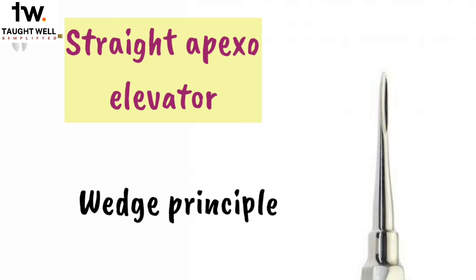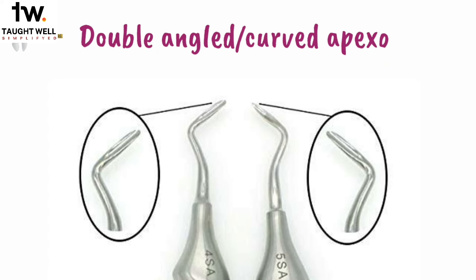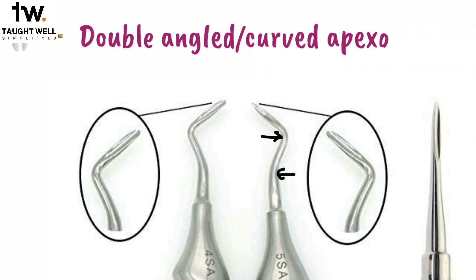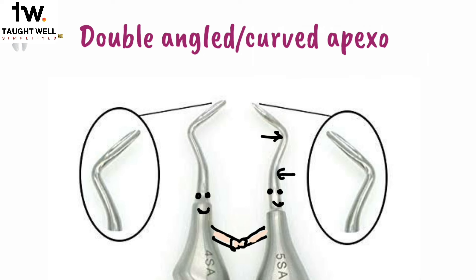Since we are talking about Apexo elevators, let's talk about the double-angled Apexo, or the curved Apexo elevator. The blade has a convex and a concave surface ending in a sharp point. The blade is just like the blade of the straight Apexo, but it is double angled and they are paired for mesial and distal roots. This double angle makes it easy to use in the posterior regions of the oral cavity. They are used for fractured roots of maxillary and mandibular posterior teeth.